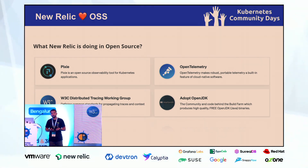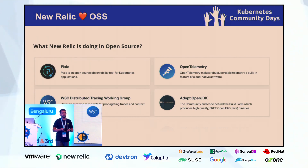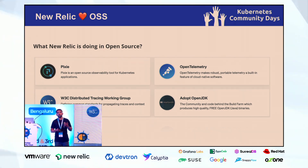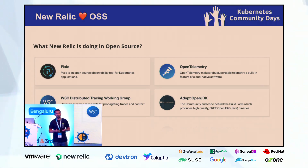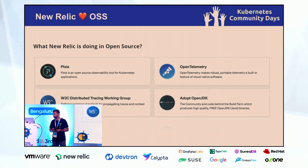There is also Adopt OpenJDK, a project that New Relic supports. If you want a compiled OpenJDK, you can directly get it from there. We are also a proud contributor on that project.